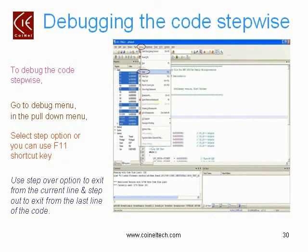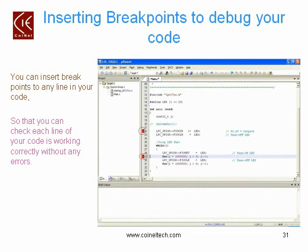Now let's see how to debug your code step by step. Go to the Debug menu and select the Step option, or use the shortcut key F11. You have different options here: the Step Over option exits from the current line of execution, and Step Out exits from the last line of code execution. Breakpoints are specifically used so you can check your code line by line to verify whether it is working correctly.